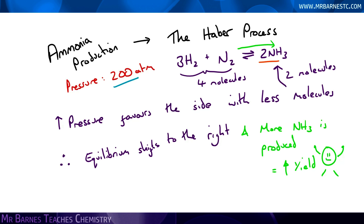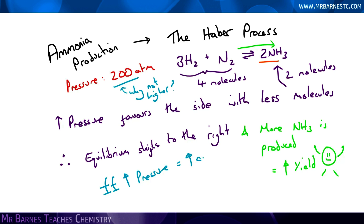The question again: why do we use 200 atmospheres? Why do we not go higher than that if we know that pressure increases the yield of ammonia? Simply, it's to do with cost. As we increase the pressure, it becomes more and more expensive to make the facilities to do that. So we have to compromise between cost and the yield that is produced.